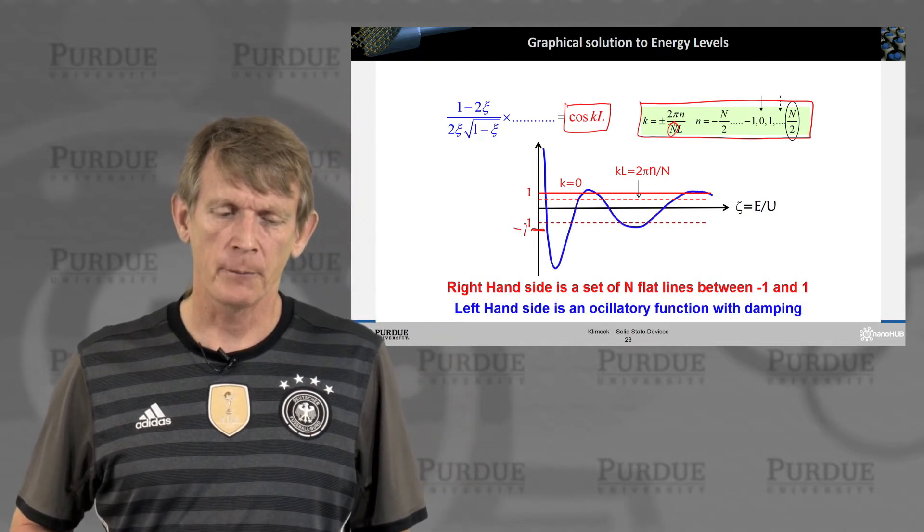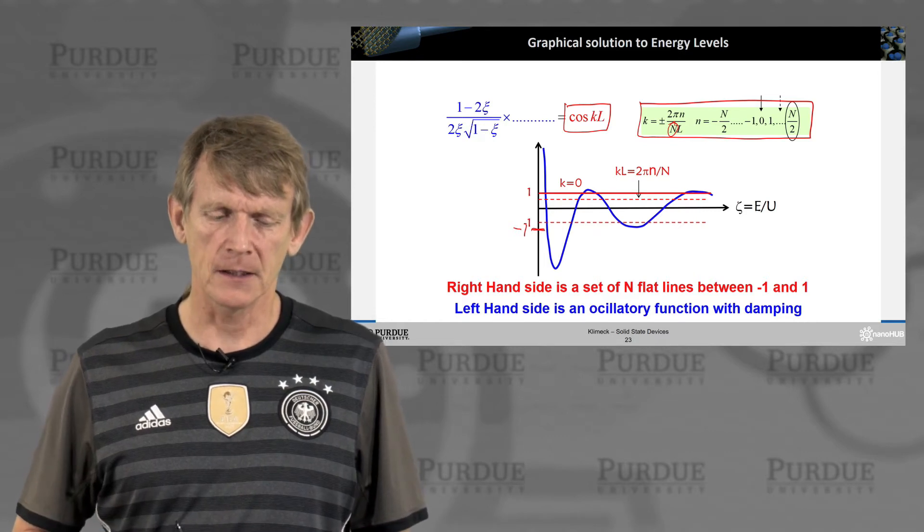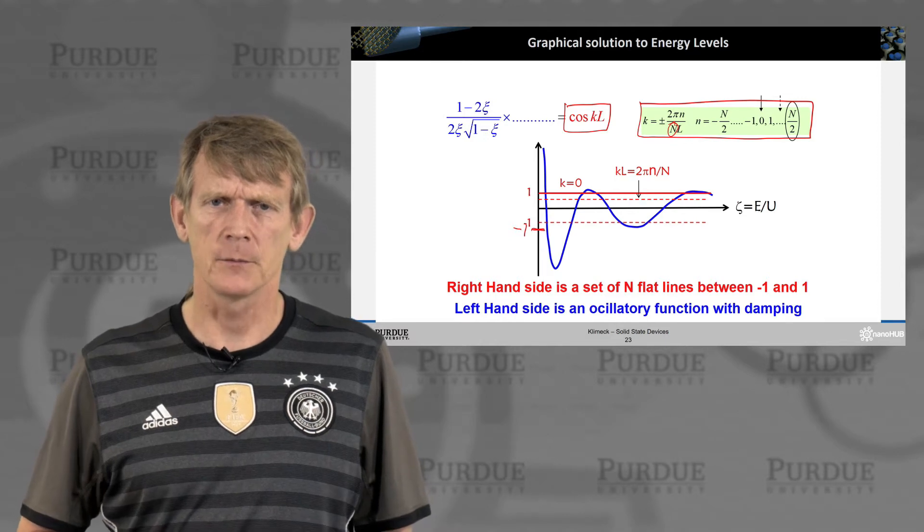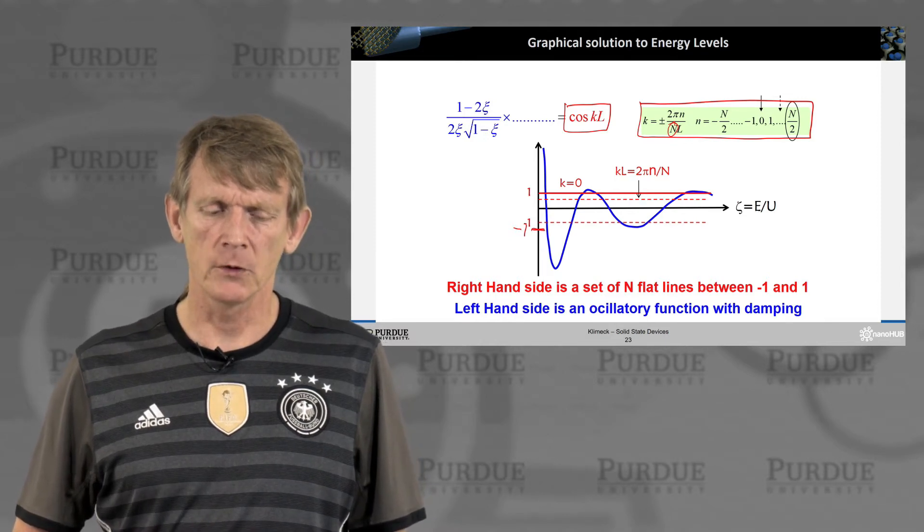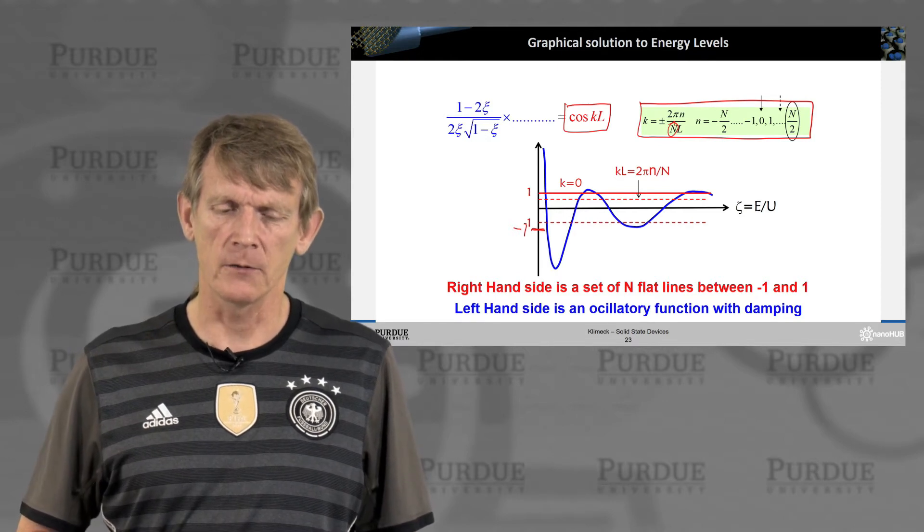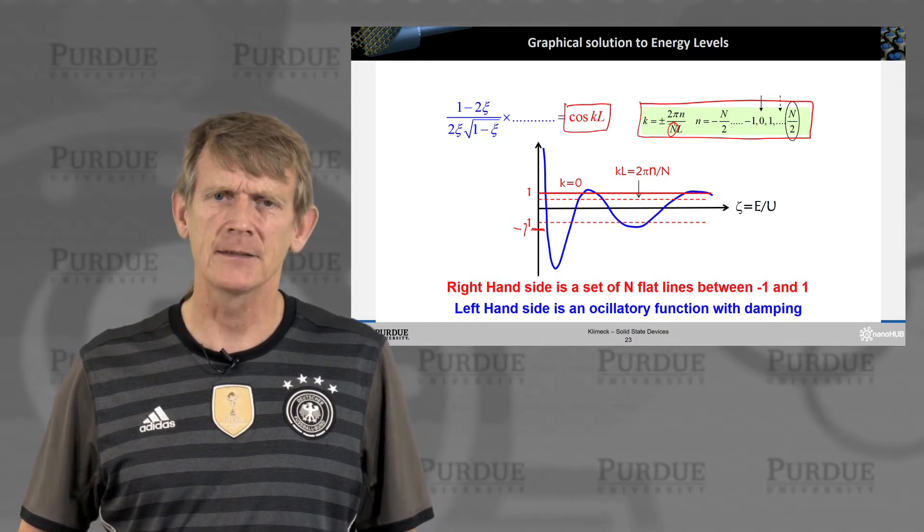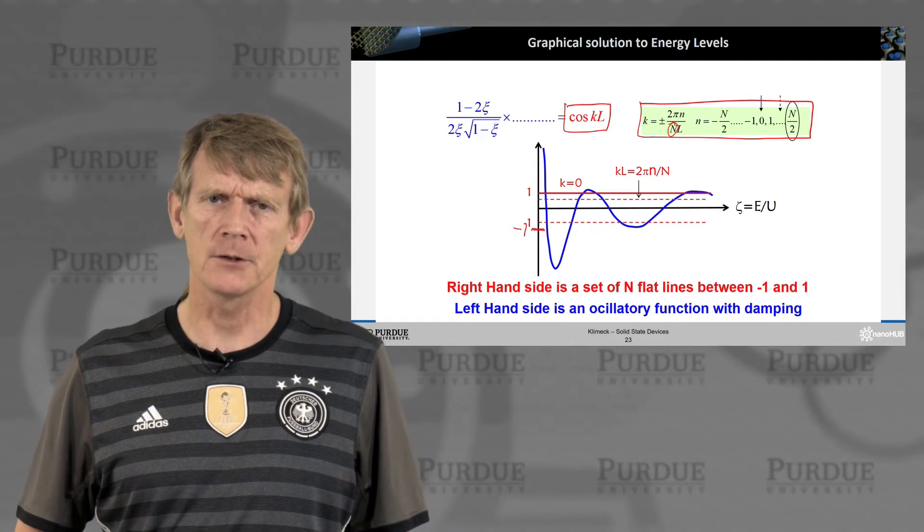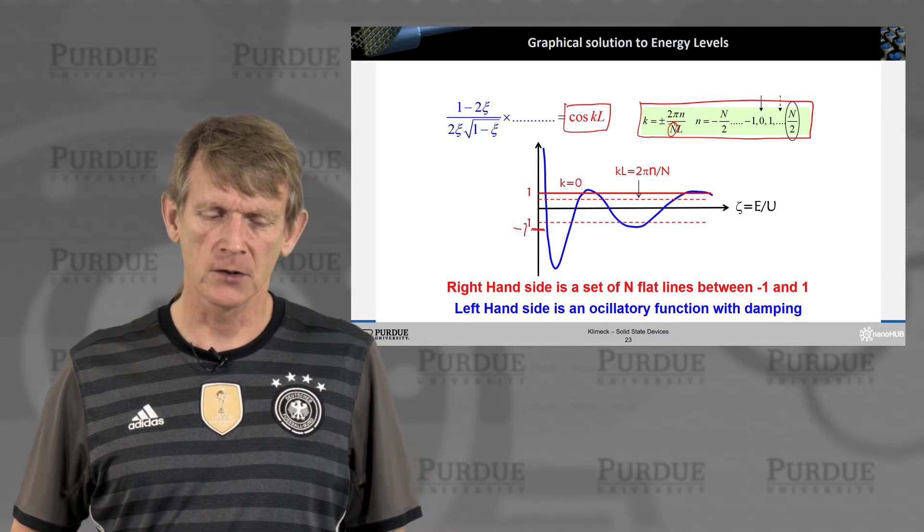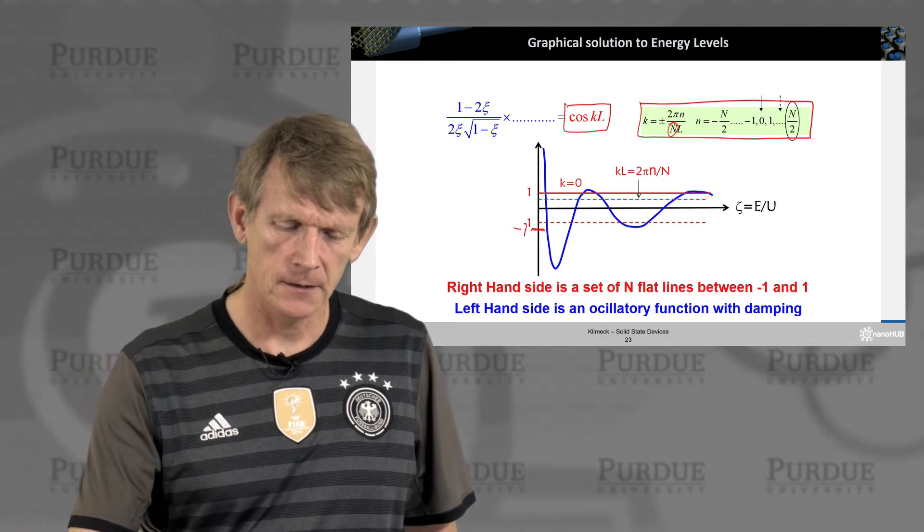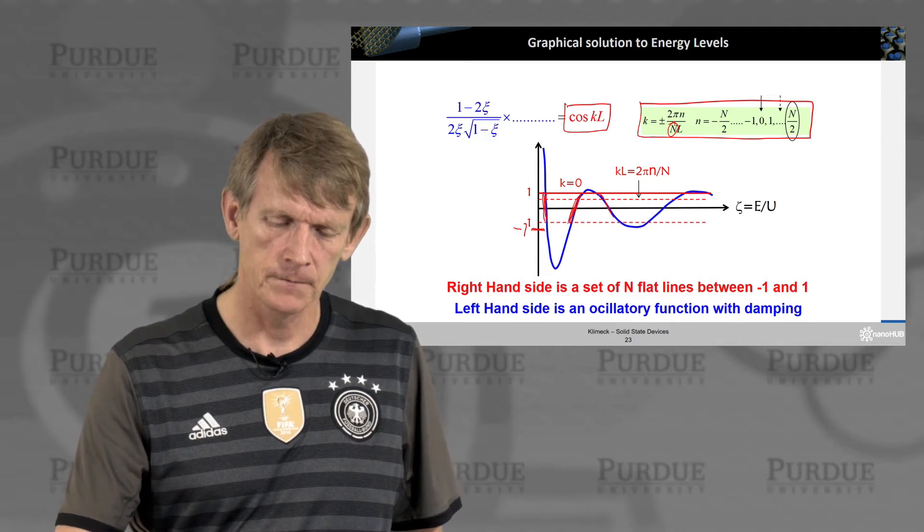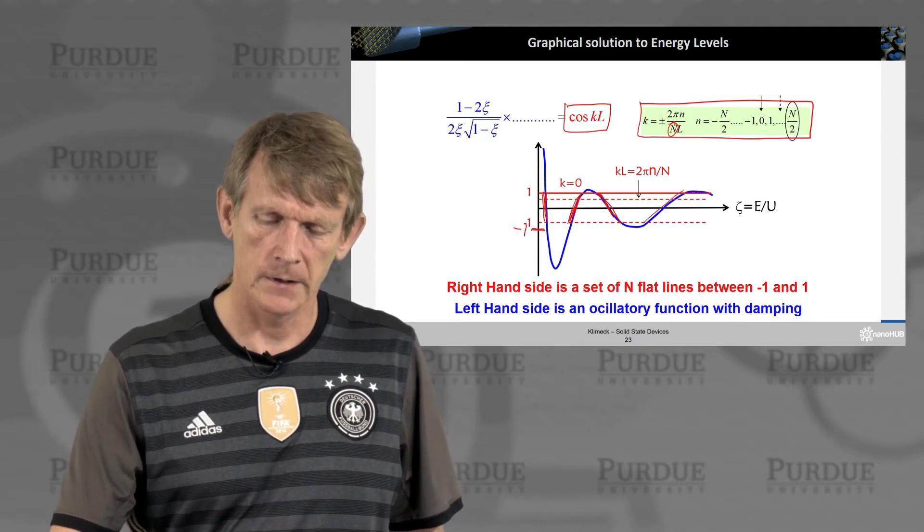If we plot this function on the left-hand side in blue, that is an oscillatory function that has some damping in it. And we would want to find the intersections of the blue line with the red line given a certain value of k. And what that means is you will only find solutions that are within these ranges here. Like this.